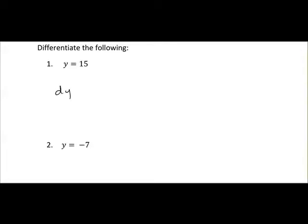So any time you differentiate a constant, you just differentiate it to 0. So differentiate 15, it becomes 0, differentiate minus 7, it also becomes 0. So any time you differentiate a constant, it just becomes 0.